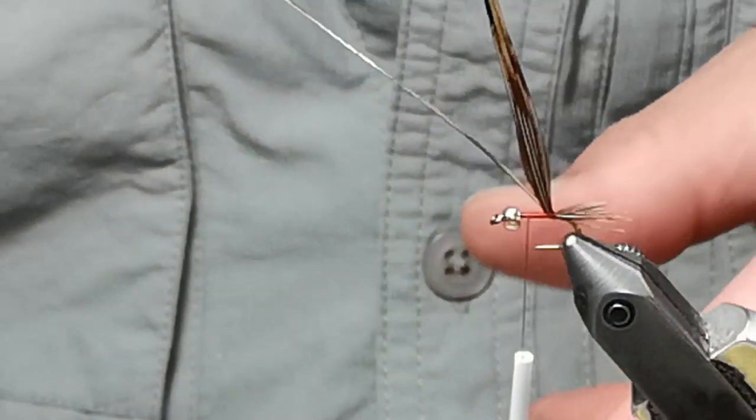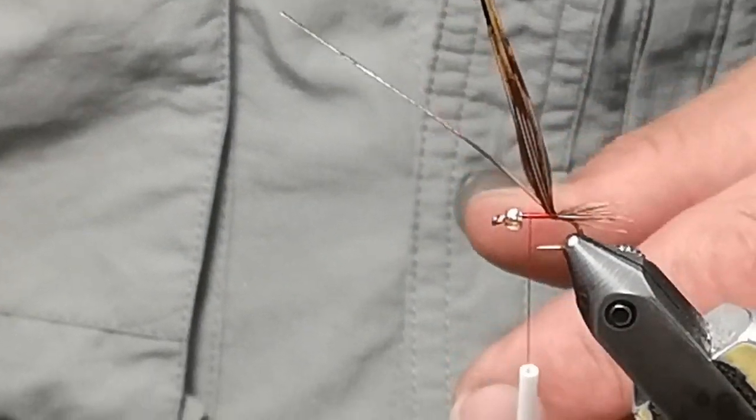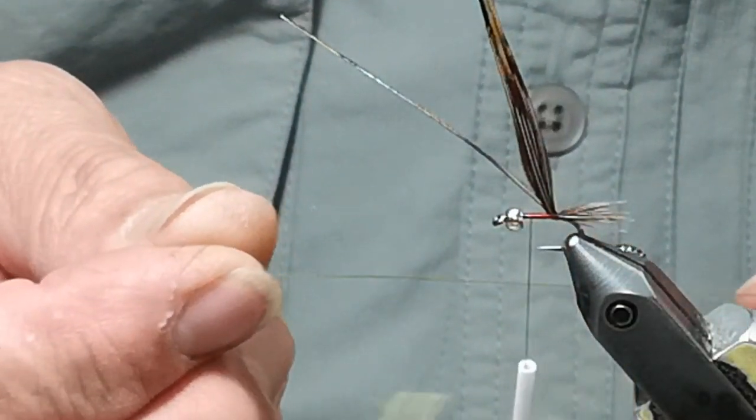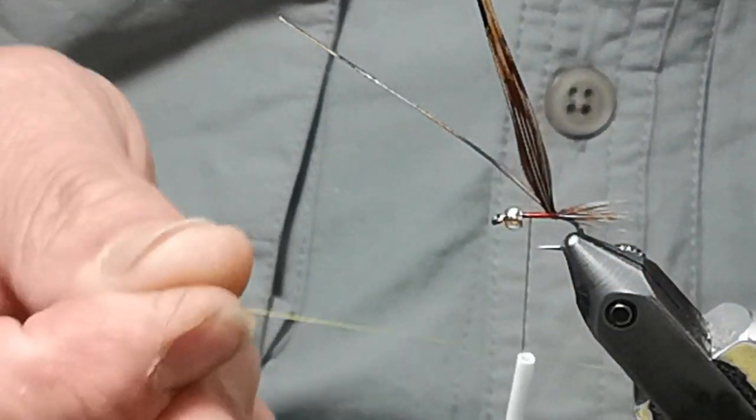When I'm tying this, because there's only pheasant tail for body and pheasant tail for tail, I'll tie it on at the butt. My wire is going to be a gold wire, small in size.